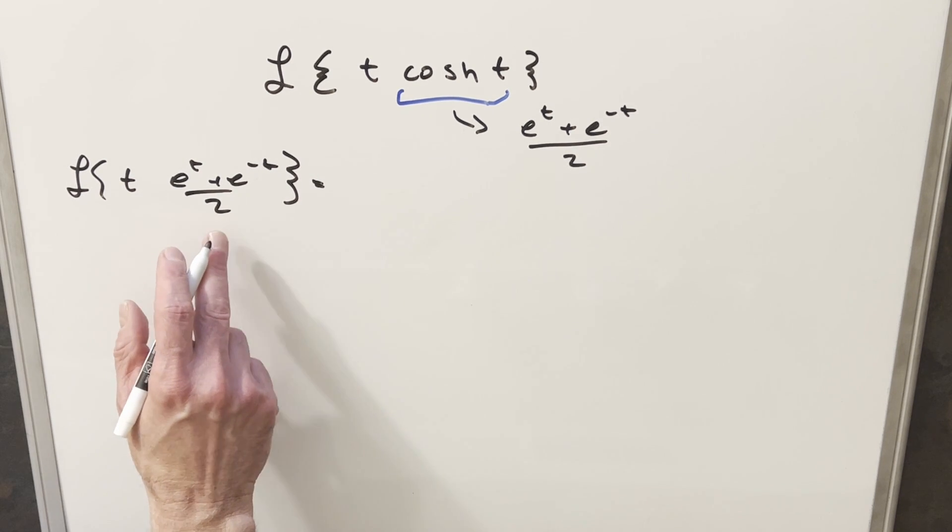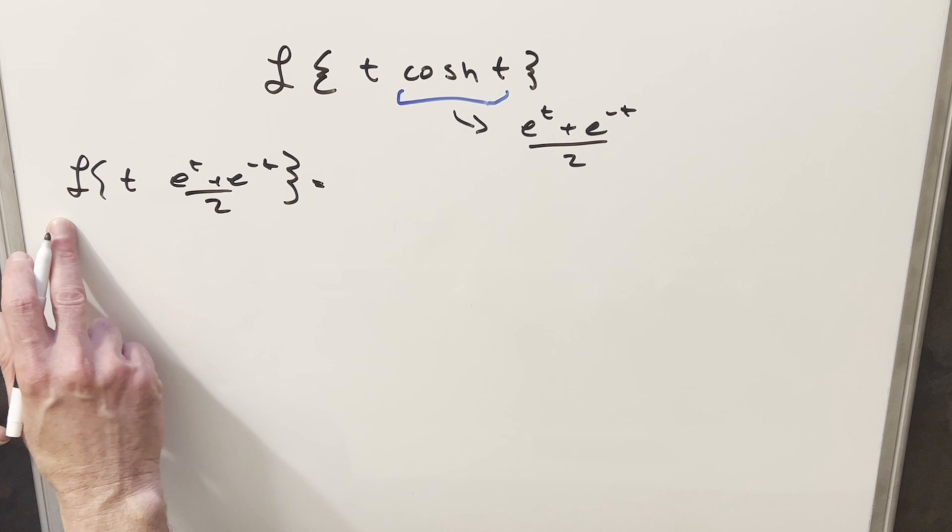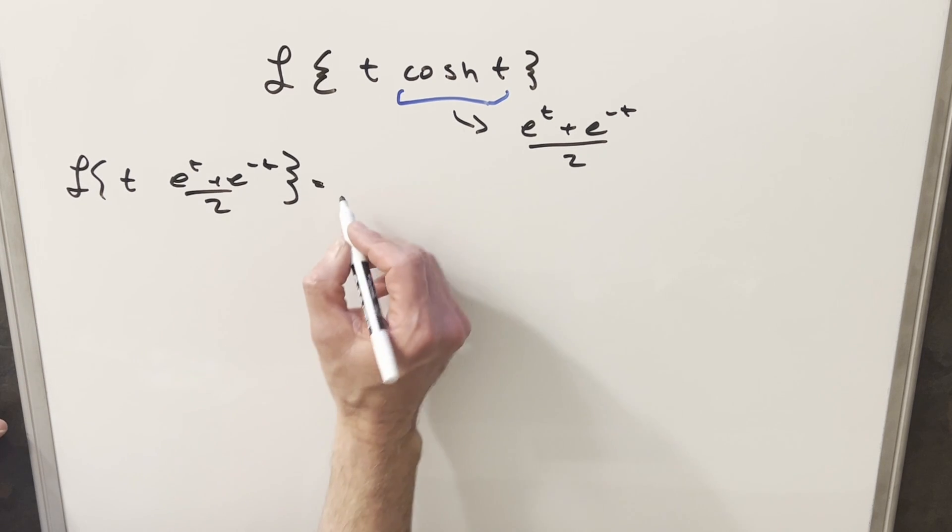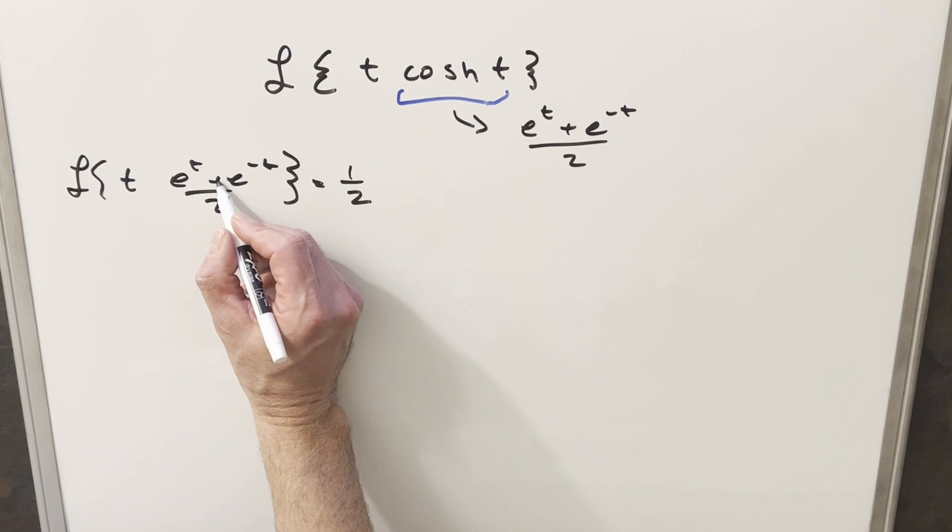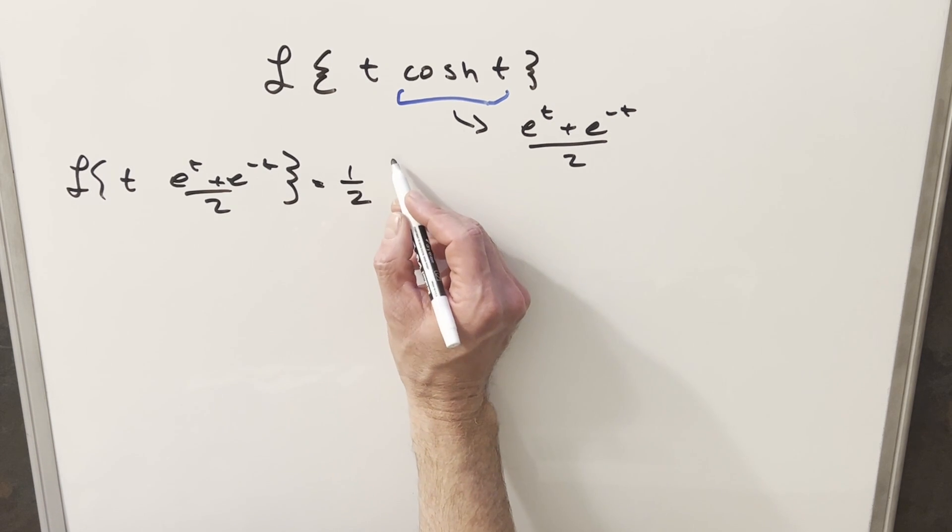I've gone over in previous videos that we can actually take a constant and bring it outside of the Laplace transform the same way we can bring it outside of an integral. So I'm going to bring one half in front, and because we have this plus sign, I can split this into two Laplace transforms.